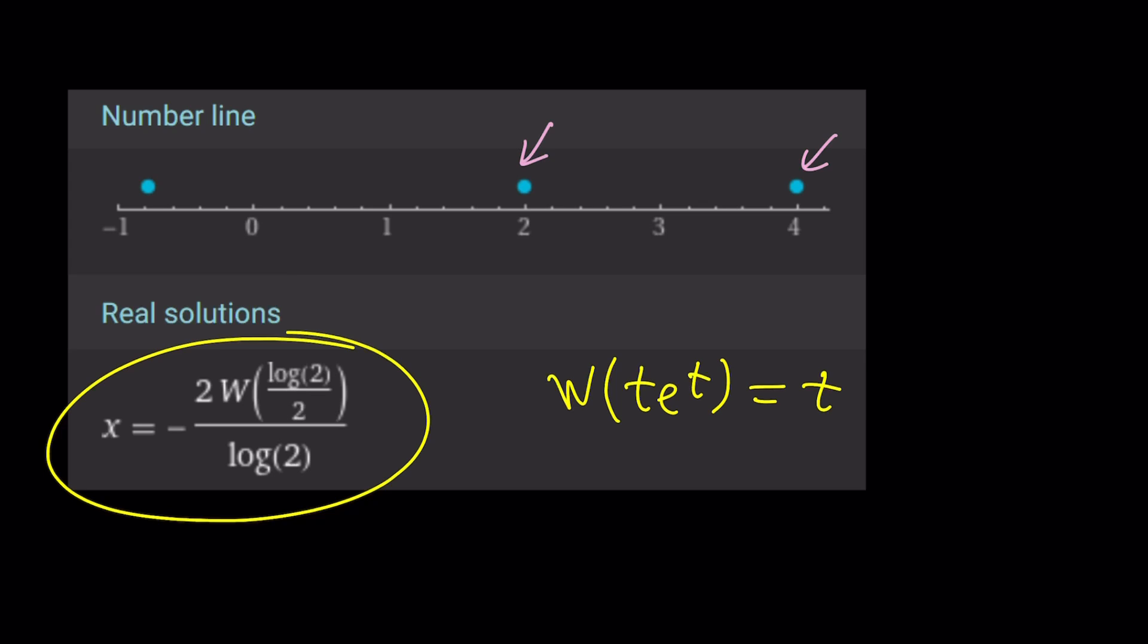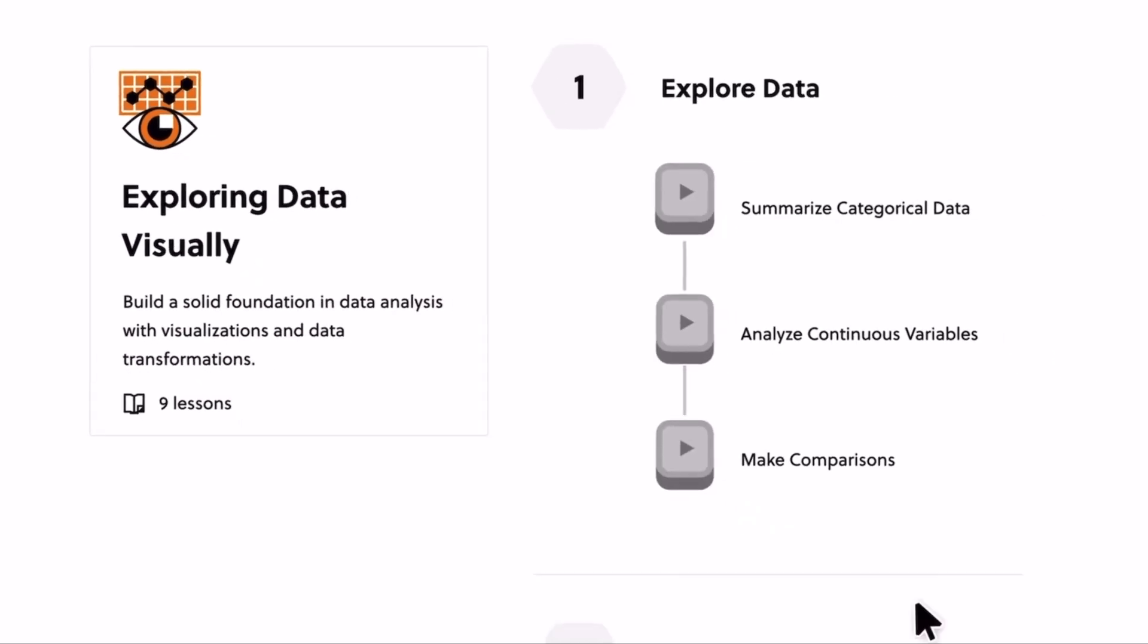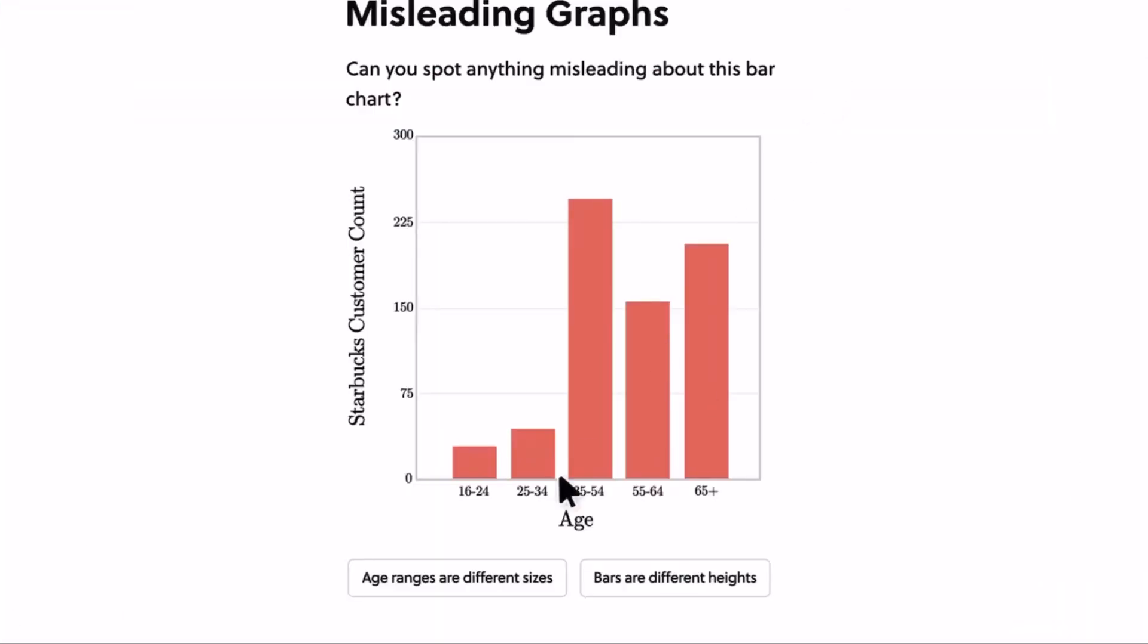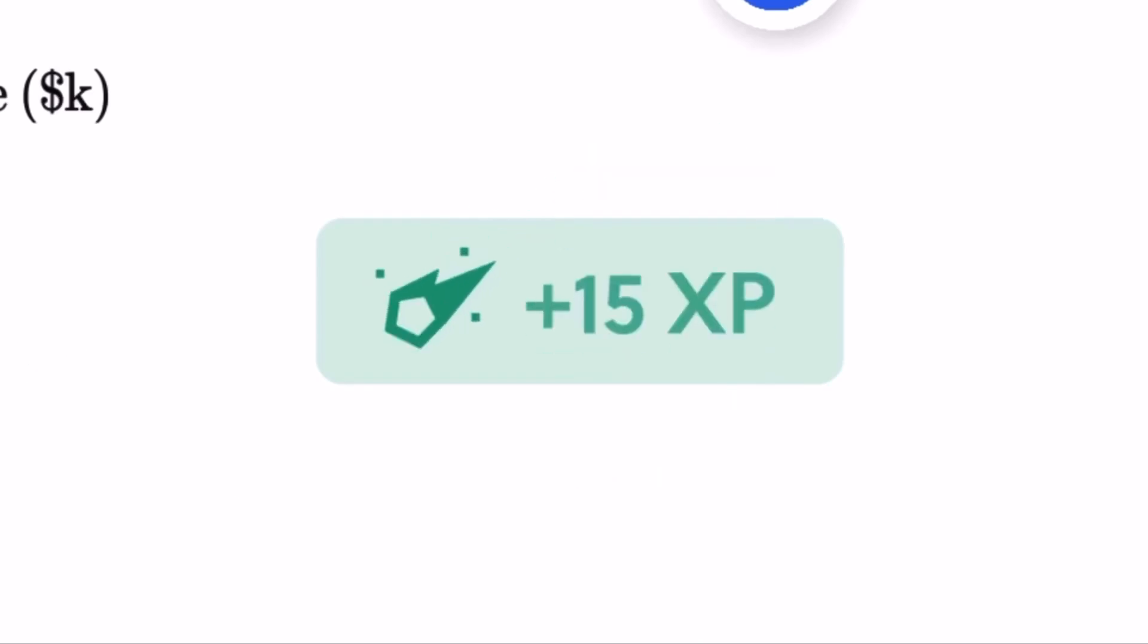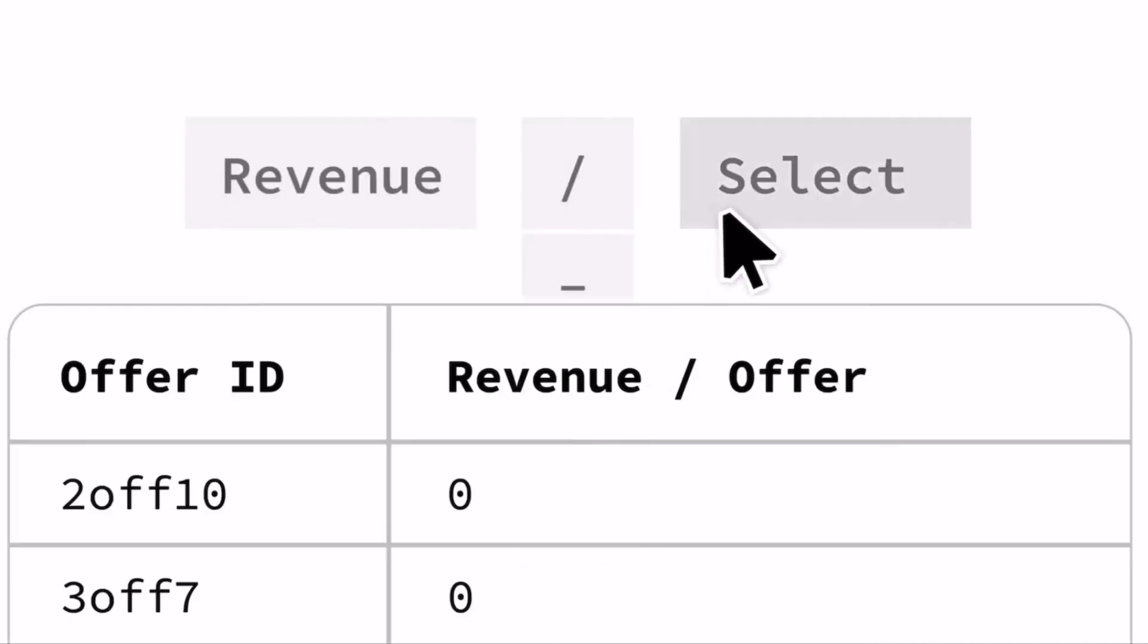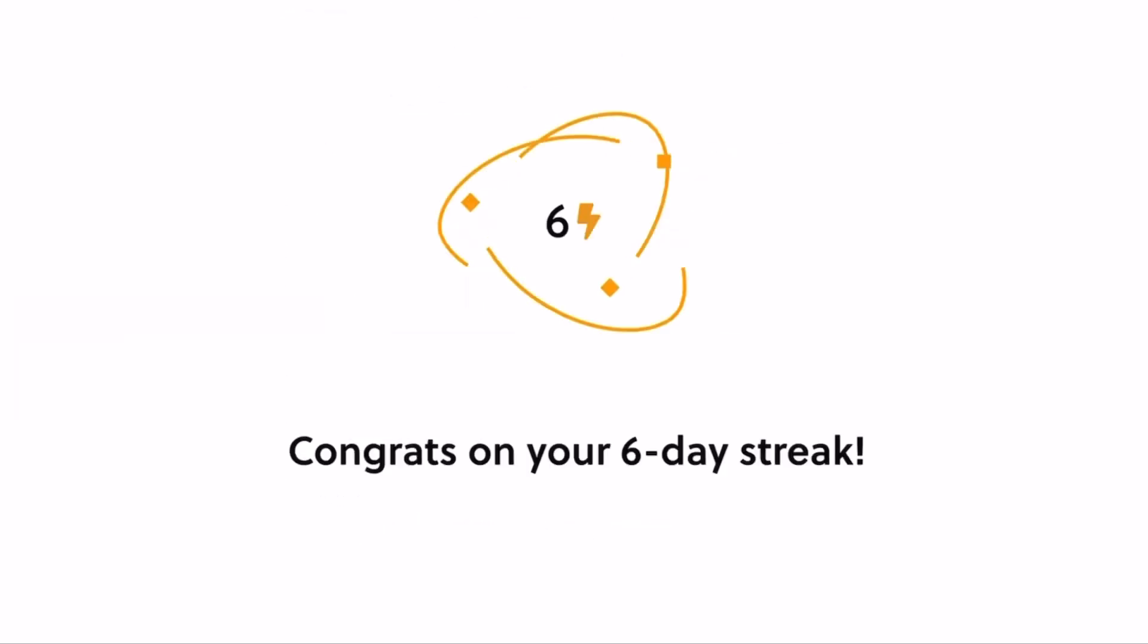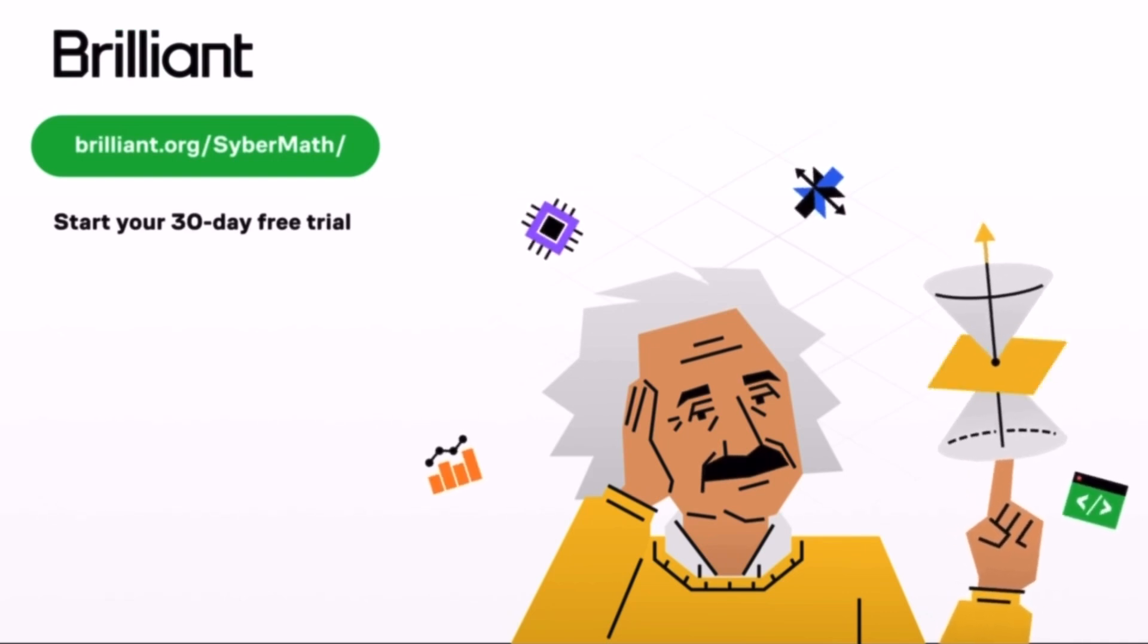Would you like to learn about exponential equations and many other topics in math? In that case, I would highly recommend today's sponsor, Brilliant.org. Brilliant has tons of courses in math, computer science, data analysis, and much more. Exploring Data Visually is an excellent course and a great introduction to data analysis. To try everything Brilliant has to offer for free for a full 30 days, visit brilliant.org slash cybermath or click on the link in the description. You'll also get 20% off an annual premium subscription. So make sure to check it out.